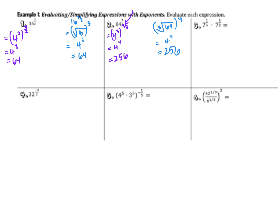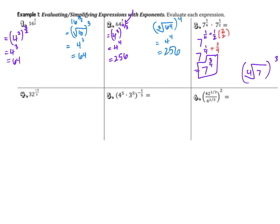For number 3, with 7 to the power of 1/4 times 7 to the power of 1/2, we add the exponents: 1/4 plus 1/2. Finding a common denominator gives us 1/4 plus 2/4, which is 3/4. So the result is 7 to the power of 3/4. Since there's no integer that is the fourth root of 7, this cannot be simplified further. The radical form — the fourth root of 7 cubed — is also acceptable, but it's cleaner to leave it as a single term.